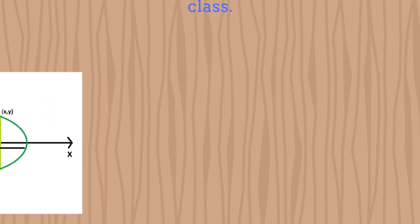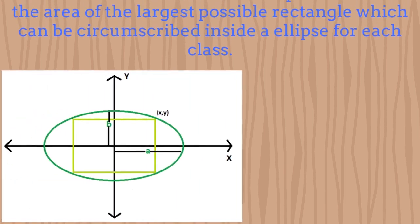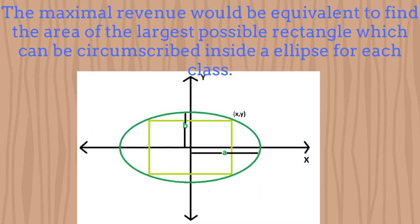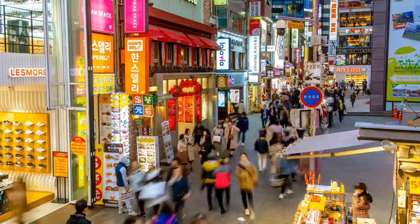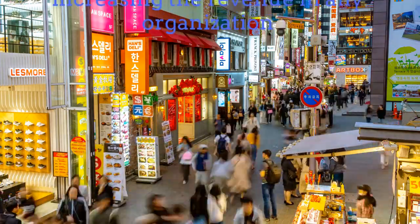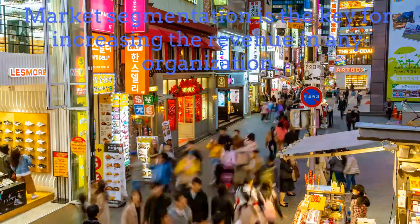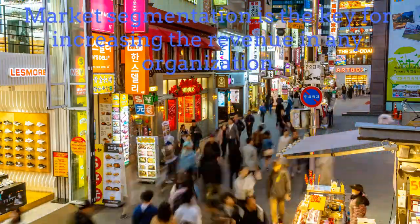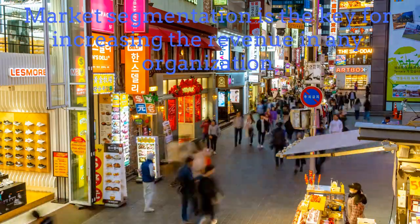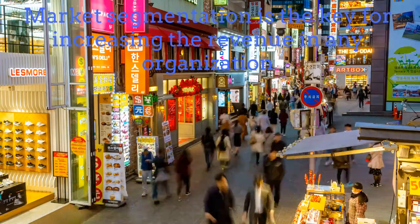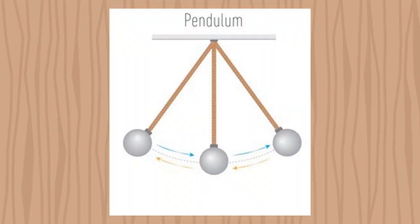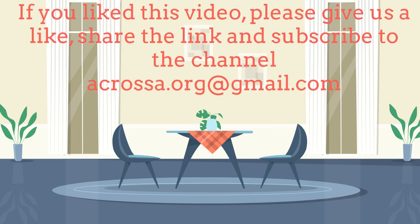The revenue management problem in this case would be to find the largest possible rectangle that can be inscribed inside the ellipse for each class, taking into account that each class is a projection of the ellipsoid over a plane. In summary, market segmentation is the key to the success of many companies. It helps to increase the total revenue in many organizations. Market segmentation can be applied to any product if we know what types of upgrades to offer. Finally, market segmentation can be modeled with a multidimensional quantum harmonic oscillator.